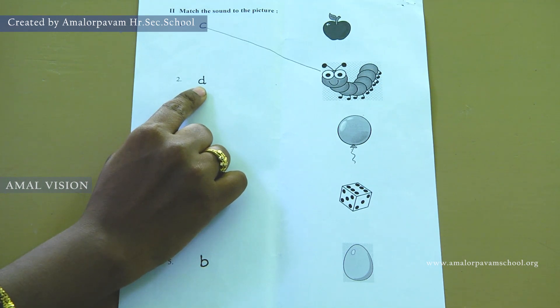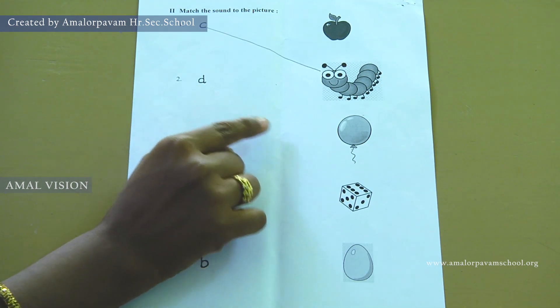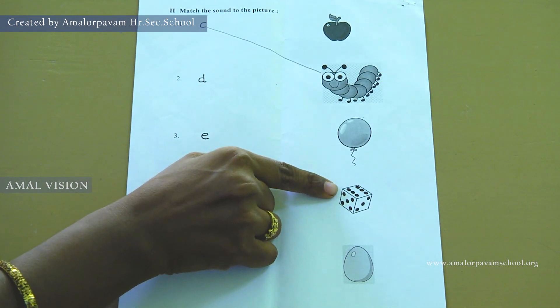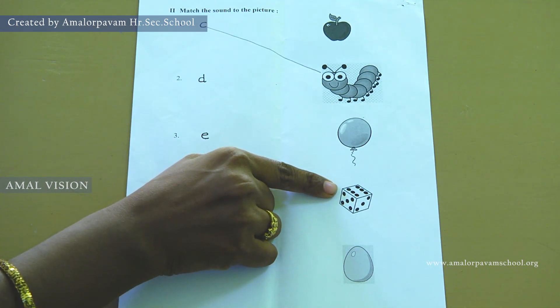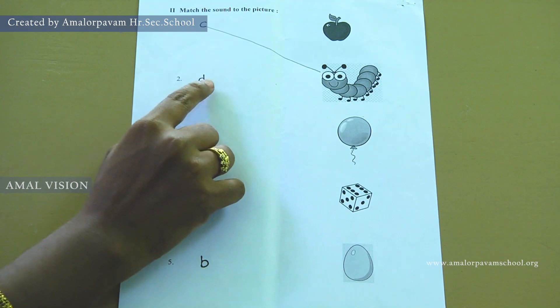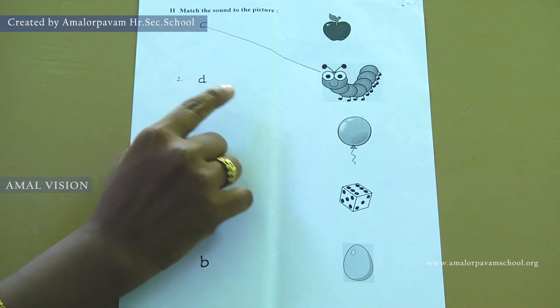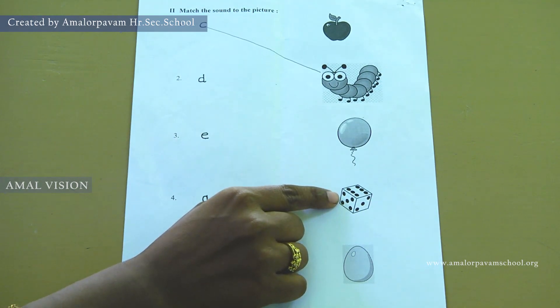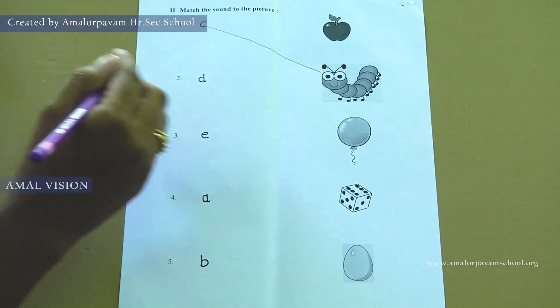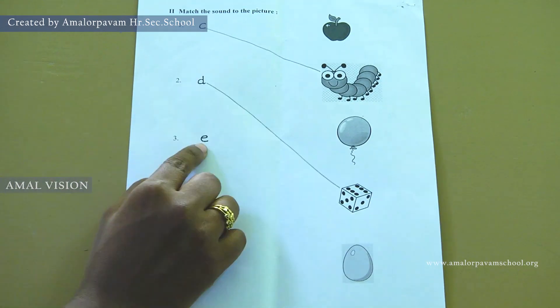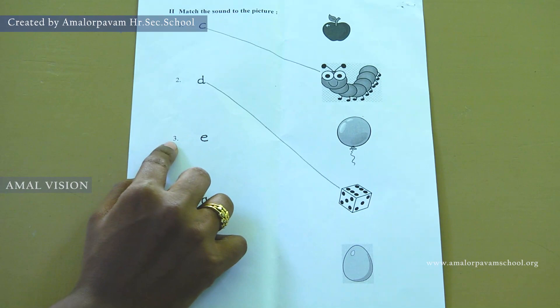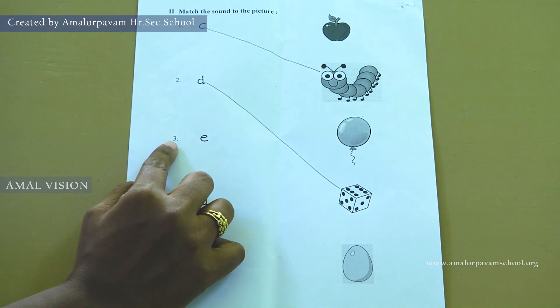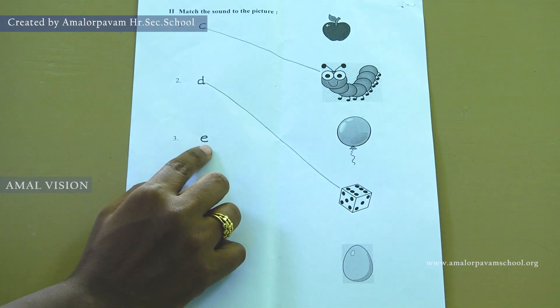Now keep finger in two. What sound is this? De, de, de — dice. Match de to the picture dice. Keep finger in three. Can you say what sound is this?